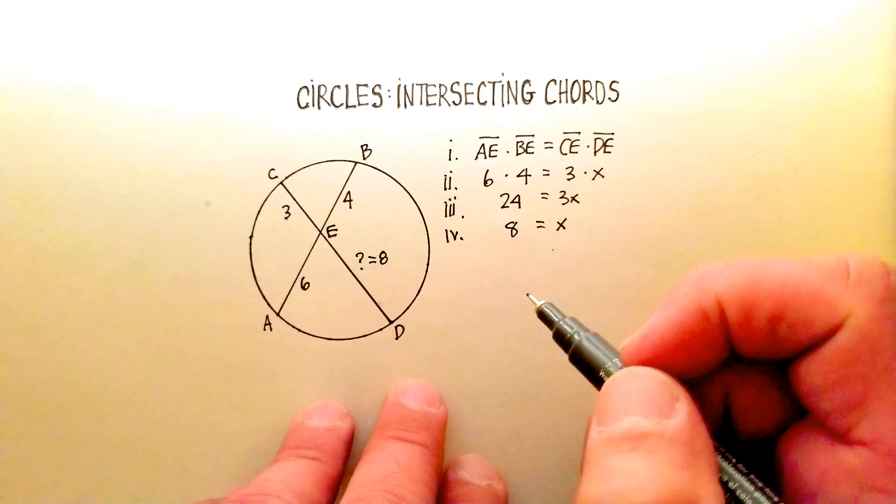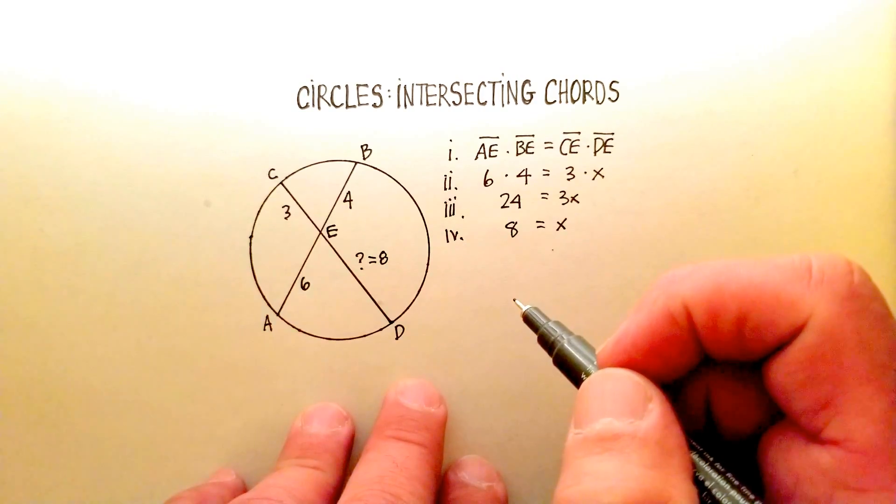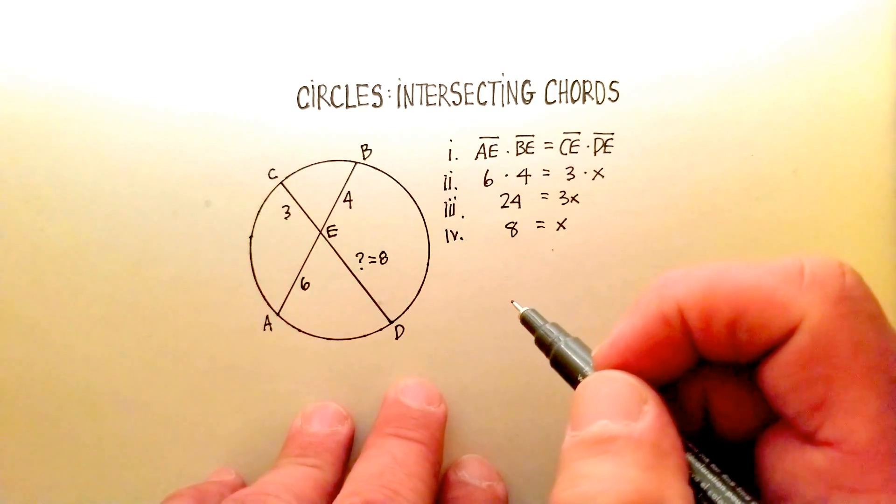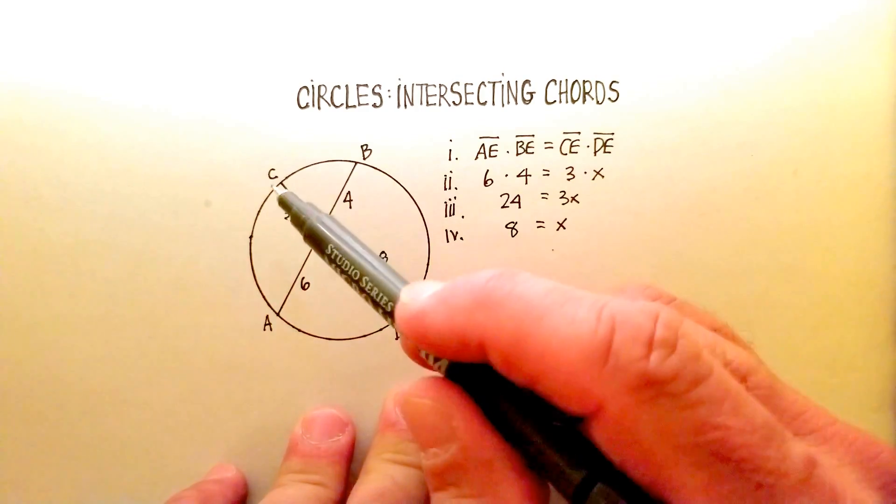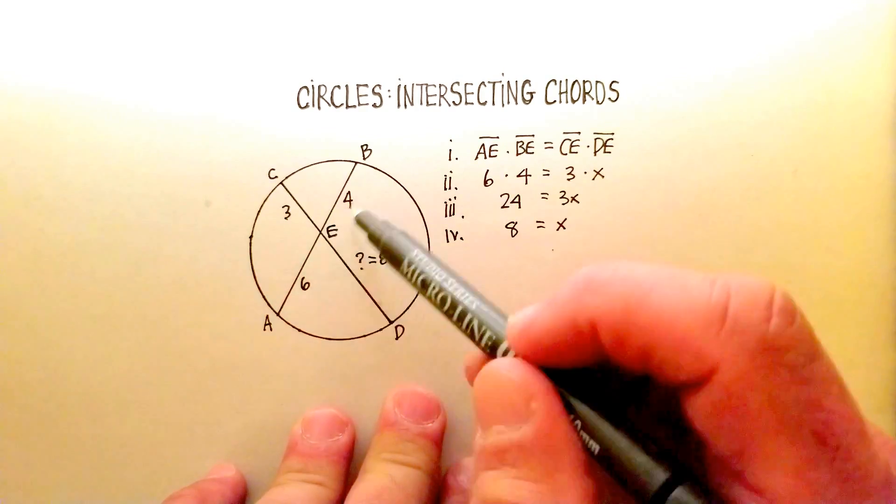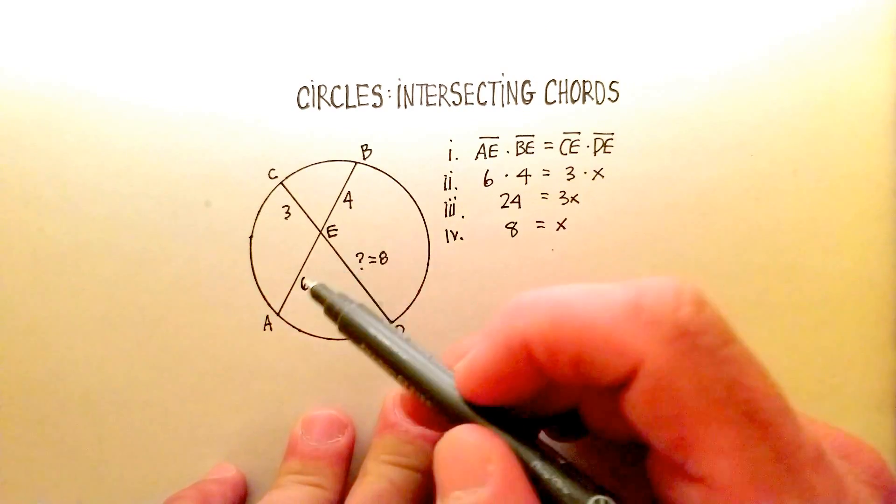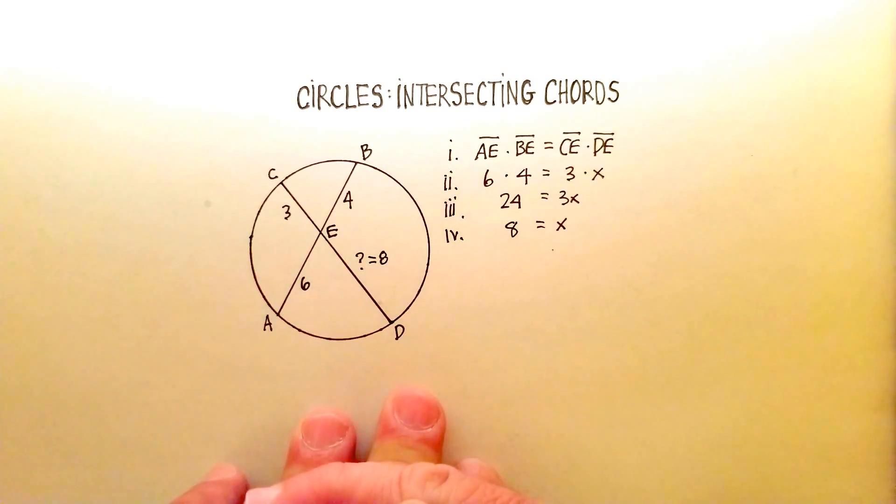And that makes some sense, doesn't it? Well, actually, it doesn't necessarily make intuitive sense because you can see that this chord is a whole length of 11 and this chord is a length of 10. But the products of the two are the same, and that's what the relationship is. Okay, I hope that was helpful to you.